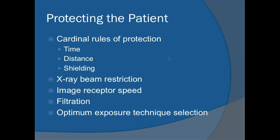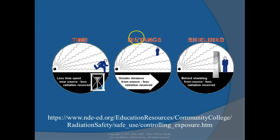The cardinal rules for radiation protection are time, distance, and shielding. Reduce time near the source, increase distance from the source, and always wear shielding and protect the patient with lead. Additional patient protection measures include x-ray beam restriction (collimation), using the fastest image receptor speed, filtration to remove soft x-rays, and optimal exposure technique selection. Greater distance means less radiation received — this is based on the inverse square law.